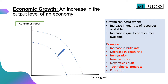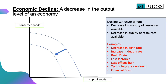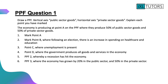As well as having economic growth, an economy can also decline. Economic decline is a decrease in the output level of an economy, and it can occur when there's a decrease in the quality or quantity of resources available. There are some examples below for you. If you have economic decline, that would cause your PPF to shift to the left, so at every single point you can now produce less capital and less consumer goods.